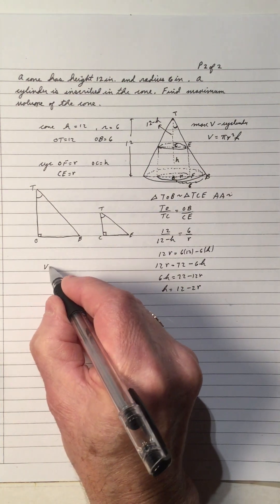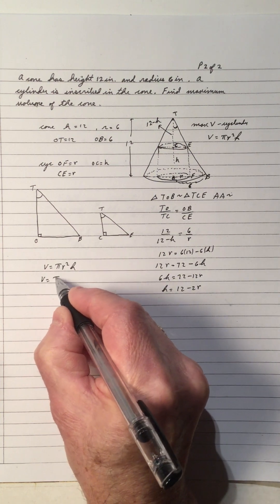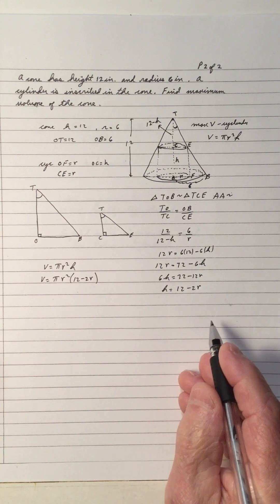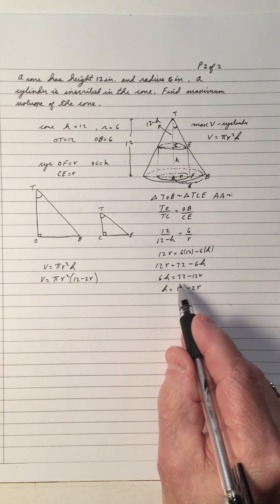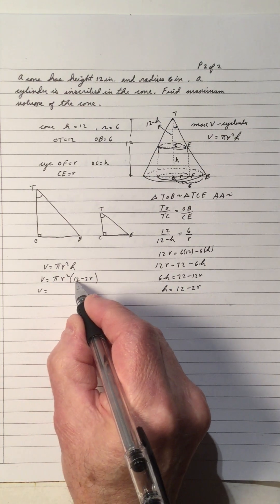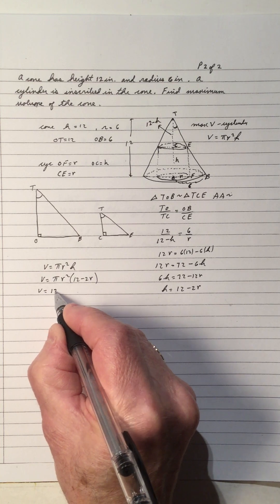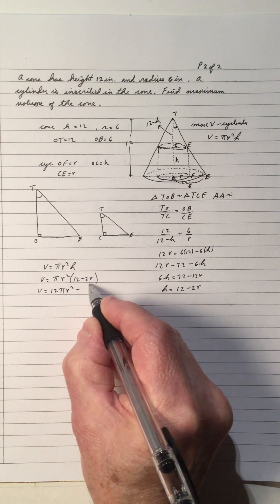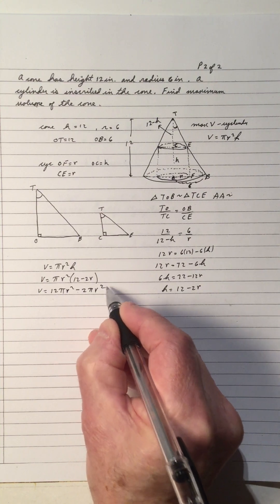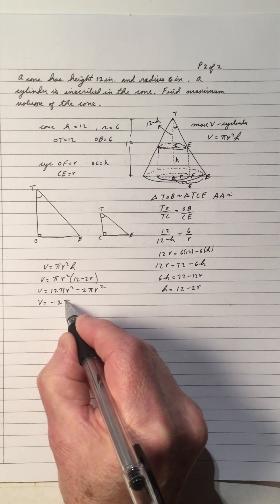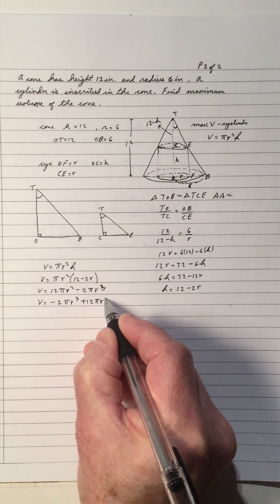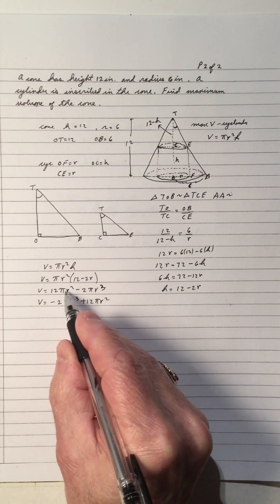Now I have the volume as pi R squared H, and H is 12 minus 2R. Since R is squared in the formula, solving for H avoids extra squaring. So the volume equals pi R squared times (12 minus 2R), which expands to 12 pi R squared minus 2 pi R cubed. In descending order that's negative 2 pi R cubed plus 12 pi R squared.